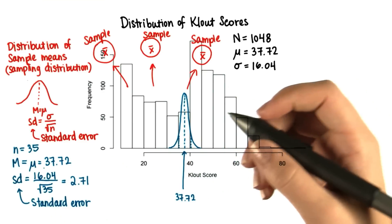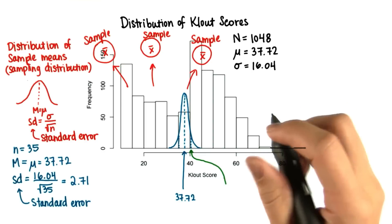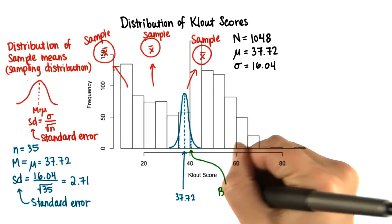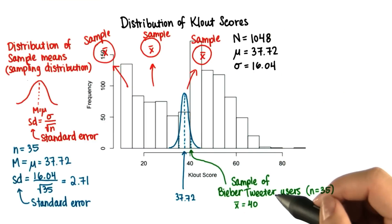So then we said, what if we get this sample of size 35, and the mean is 40? And everyone in this sample uses the app, the Bieber Tweeter. The first part of this lesson is all about estimating what the mean clout score would be if everyone started to use the Bieber Tweeter.